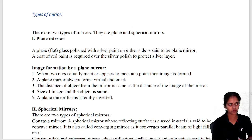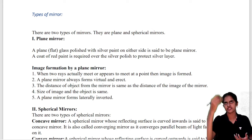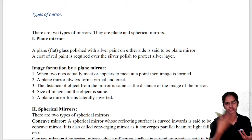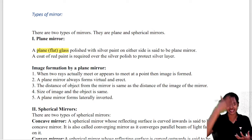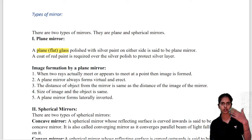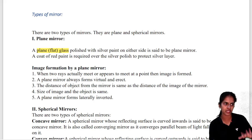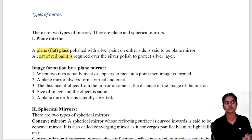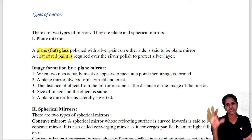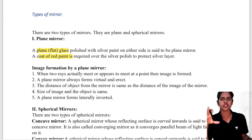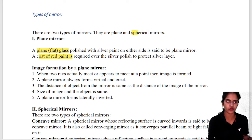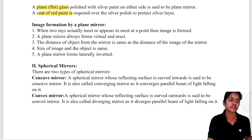Mirrors are of different types. A plane mirror is what we use at home — it is a flat glass polished with silver paint on one side, with a coat of red paint over the silver to protect it. Now we are going to learn about spherical mirrors, but you should know plane mirrors from your 9th class.